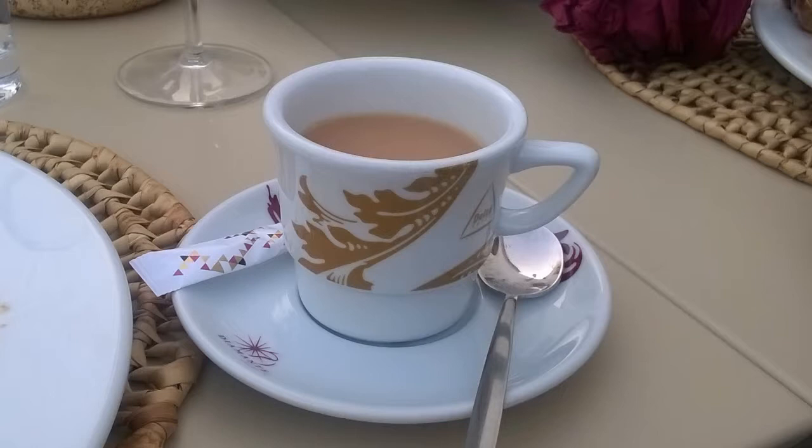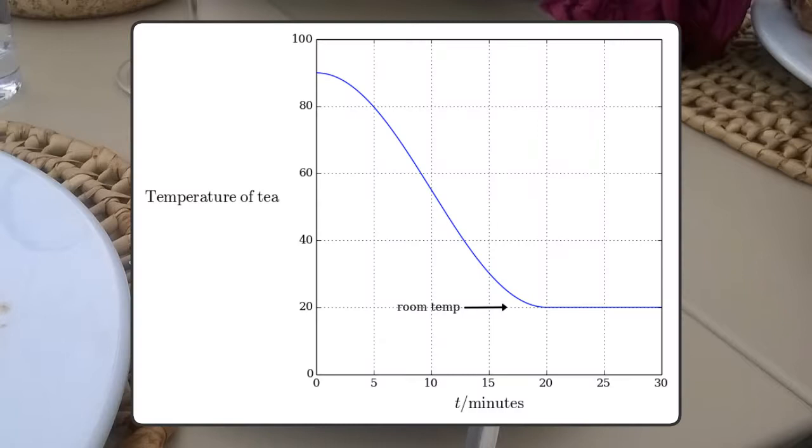Suppose you've just made yourself a hot mug of tea. If you forget about it for half an hour, it will cool to room temperature. This is an example of equilibration.